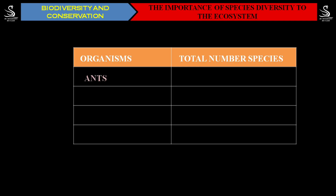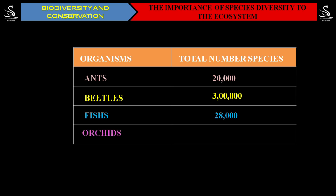As you all know, on planet Earth there are 20,000 different types of ant species, about 300,000 different species of beetles, around 28,000 different fish species, and about 20,000 different species of orchids — beautiful flowering plants — on the planet.